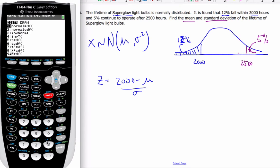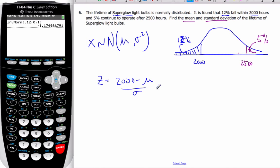If I go to my calculator, inverse normal, my area is 12%. My mean is 0 and my standard deviation is 1 because I want the standard normal curve. And this is going to equal negative 1.175. And so that means that 2000 minus μ is equal to negative 1.175σ. And so 2000 is equal to μ minus 1.175σ.